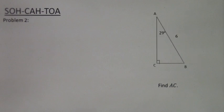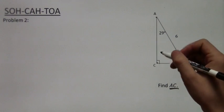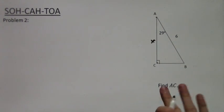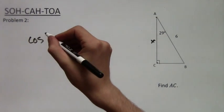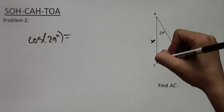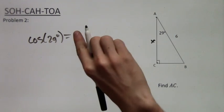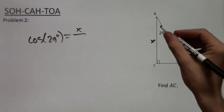Alright, a second example, find AC. So I mark AC as X, because it's unknown, and we have 29 degrees. So the cosine of 29 degrees equals adjacent, and the adjacent for the 29 degrees is X. And then we divide it by the length of the hypotenuse, which is 6.